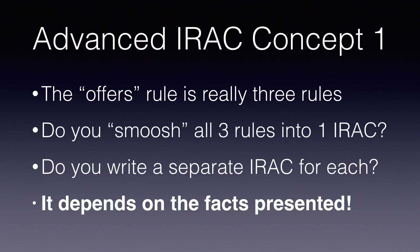Smushing is the idea that if you have multiple rules, sub-rules, sub-sub-rules, or multiple elements—however you want to think about the constituent parts of a big rule—do you put it in one IRAC or separate it out? It really depends on the facts that are presented. Sometimes you're going to use one IRAC to deal with offer; sometimes three to deal with the various sub-parts of offer. Sometimes one IRAC for negligence; sometimes four for the elements of duty, breach, cause, and damages. It all depends on the facts presented. Read the prompt carefully and think about how you want to organize your answer so that you can do the analysis completely.